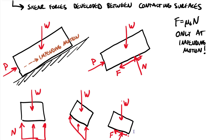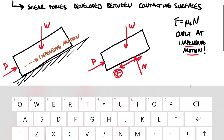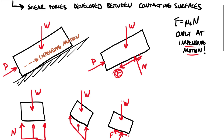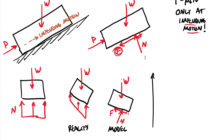Friction is not always at impending motion. There is a whole range of friction values that could keep this system static. A problem might ask: what's the total range of friction values that keep the system static? The biggest friction is at impending motion, acting back down. If we reduce the pushing force and want to keep the block from sliding down, friction swaps direction — pushing up the ramp — and increases up to impending motion in that direction. Impending motion is like the bookends on either end.